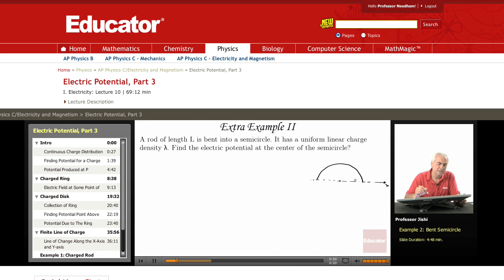A rod has a uniform linear charge density lambda. Find the electric potential at the center of the semicircle.